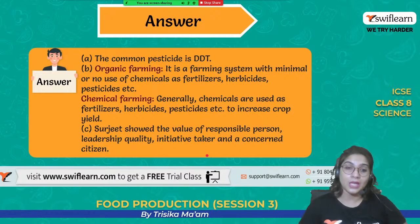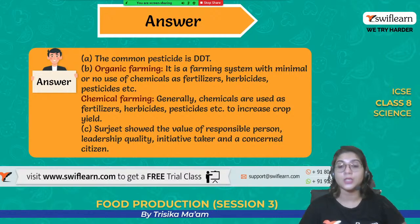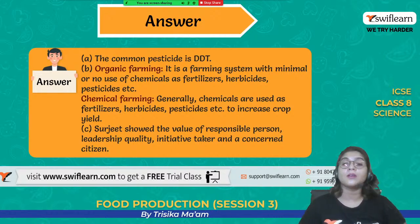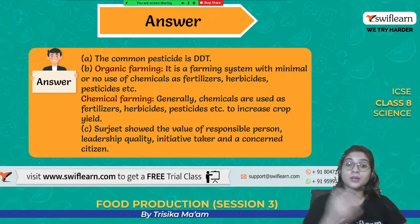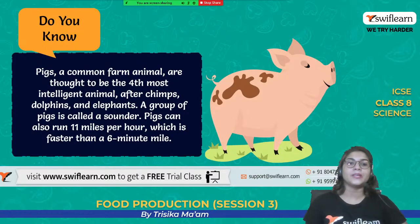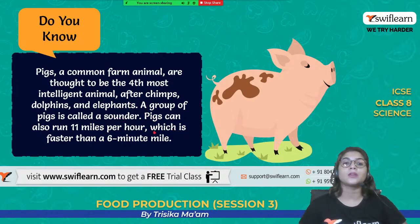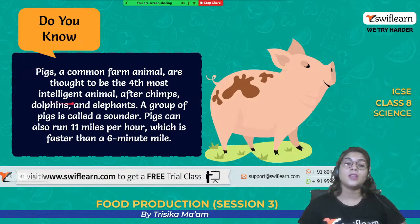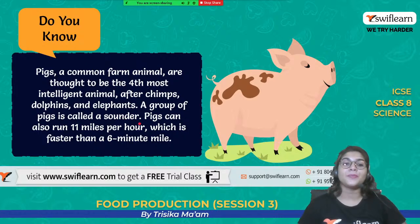The values we get from Surjit's action are: he is a responsible citizen, has leadership quality, and is an initiative taker who made farmers learn about organic farming. Here is an interesting fact: pigs are thought to be the fourth most intelligent animal, just after chimpanzees, dolphins, and elephants. A group of pigs is called a sounder, and a pig can run 11 miles per hour.